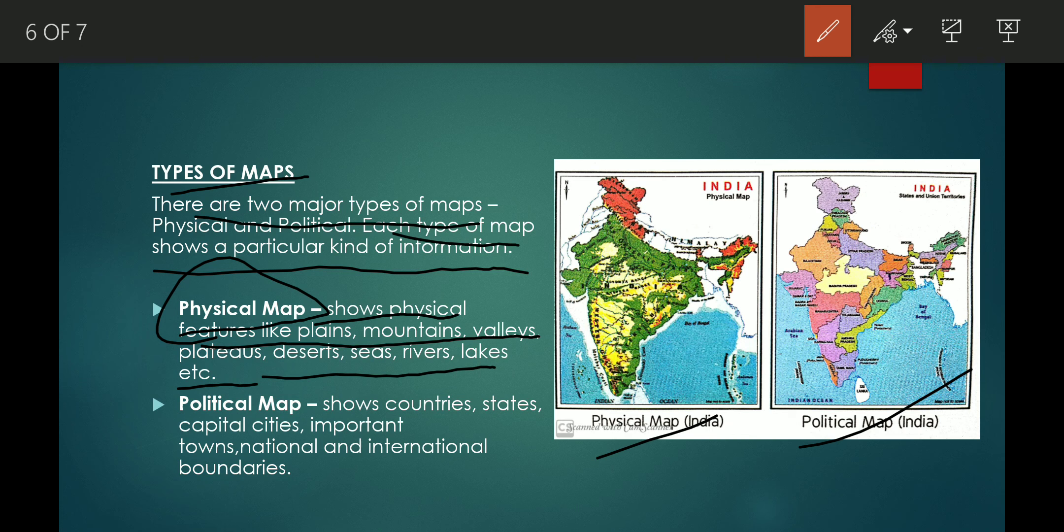Political maps show countries, states, capitals, cities, important towns, and national and international boundaries.